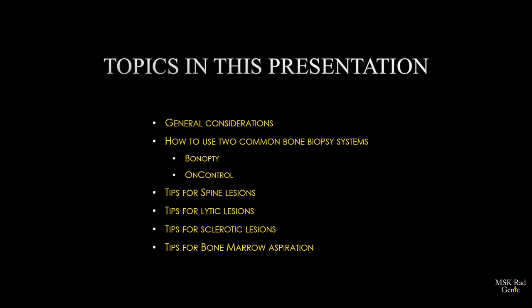The topics we're going to discuss in this presentation are general considerations and how to use two of the common bone biopsy systems: the Bone Opti and the On-Control. Those are the ones I use the most. I also use the Osteosite needle, but Bone Opti and On-Control are the ones I personally use the most. There are a lot of needles, but those are the ones I'm going to discuss. Then some tips for spinal lesions, lytic lesions, sclerotic lesions, and some tips for bone marrow aspiration.